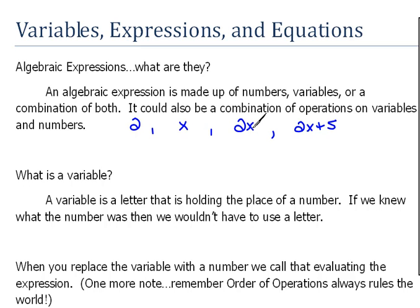For instance, when we say 2x, we're saying 2 times whatever this number is. If this number, x, happened to be a 4, then we would say 2 times 4. If it happened to be a 12, we would say 2 times 12. So that variable is an unknown amount or an unknown number. If we knew what the number was, then we wouldn't use the letter. We'd just write the number. Make sense?